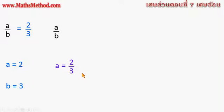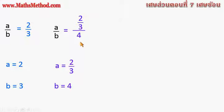อันนี้คือเสร็จส่วนทั่วไปที่เราพบเห็น แต่ถ้า A เป็นเสร็จ 2 ส่วน 3 และ B เป็น 4 แทน A ด้วยเสร็จ 2 ส่วน 3 และแทน B ด้วย 4 ตัว A ซึ่งเป็นตัวเสร็จเป็นเสร็จส่วน ตัว B ซึ่งเป็นตัวส่วนเป็นจำนวนเต็ม ลักษณะนี้จะเป็นเสร็จส่วนอยู่บนเสร็จส่วนอีกทีนึง เราเรียกเสร็จส่วนในลักษณะนี้ว่าเสร็จส่วนซ้อน